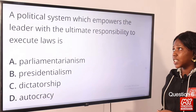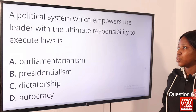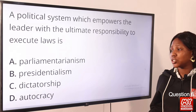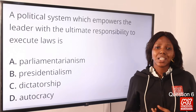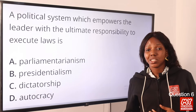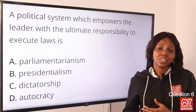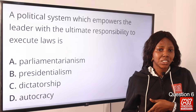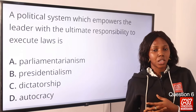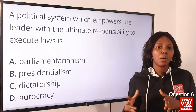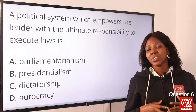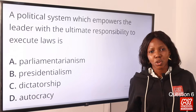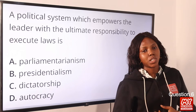Question 6: A political system which empowers the leader with the ultimate responsibility to execute laws is — the answer is presidentialism. In the presidential system of government, it recognizes dual power: the head of state and the head of government. The president is the chief executive and head of the executive arm of government, and his functions include signing bills into law. The answer is option B, presidentialism.